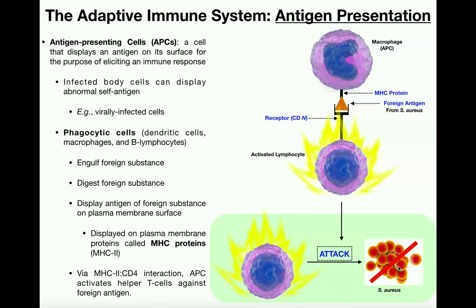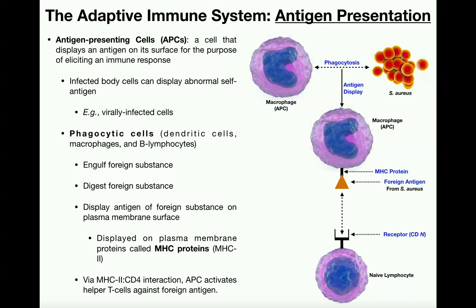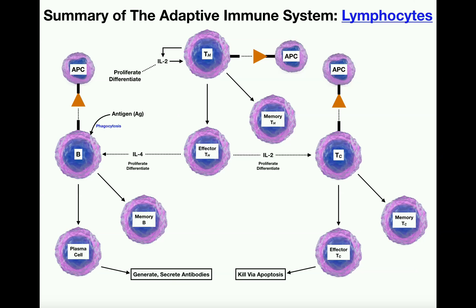This is the basis of how the adaptive immune system works: antigen presentation and subsequent activation of lymphocytes — B lymphocytes and the two subpopulations of T lymphocytes. In the next video, we'll look at a summary of the adaptive immune system in more detail. If you understand what I covered in this video on antigen presentation and the next summary video, you pretty much understand the adaptive immune system.